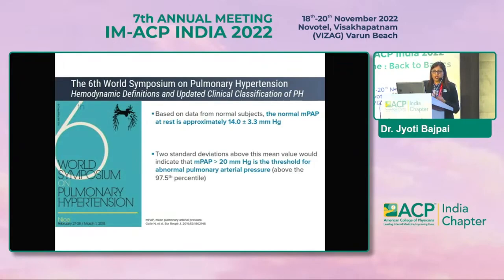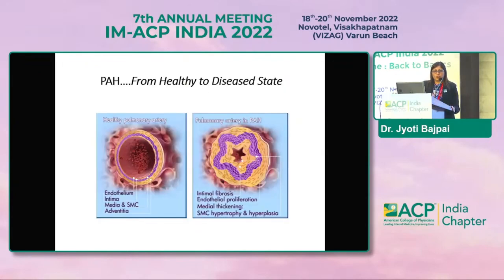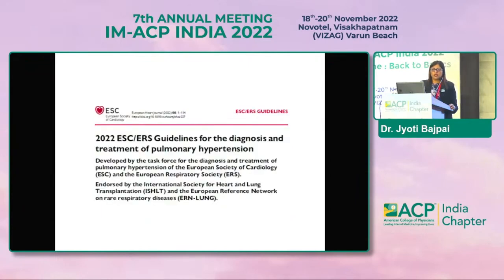Normal pulmonary artery pressure is about 14 ± 3.3 mmHg, so two standard deviations gives a PAP of more than 20 mmHg as the threshold. On the pathological side, this represents intimal fibrosis, endothelial proliferation, medial thickening, and smooth muscle cell hypertrophy and hyperplasia. In 2022, the ESC-ERS guideline for diagnosis and treatment of pulmonary hypertension was published with changes in definition, management, and risk stratification.